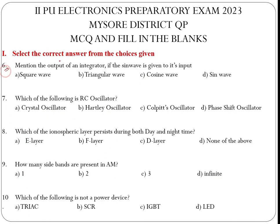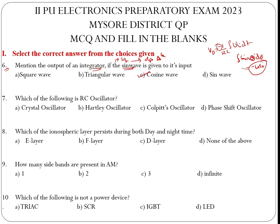Sixth question: Mention the output of an integrator if a sine wave is given. The output of an integrator is minus 1 by RC integral of VI dt. Since VI is sine, integrating sine gives minus cosine, but the minus signs cancel, so sine input gives cosine output. If the input is a square wave, then the output would be a triangular wave.